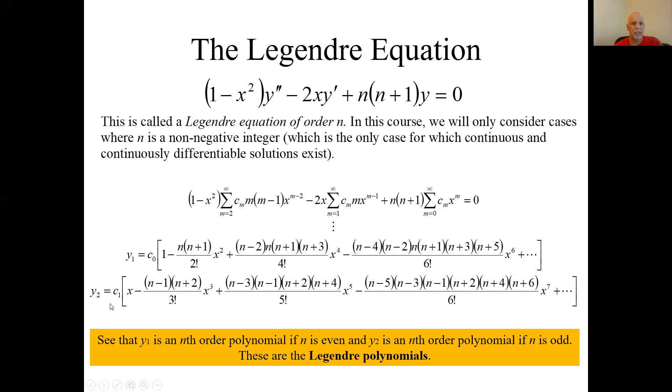Similarly, the second solution, the particular solution, if n is odd, like here if n is one, this becomes zero, that's zero, that's zero, all these guys are zero except that first term. So again, if n is odd, this infinite sum truncates to a polynomial of order n. Either way, if n is even or odd, you're going to get a particular solution that's just a polynomial, and those solutions are called the Legendre polynomials.